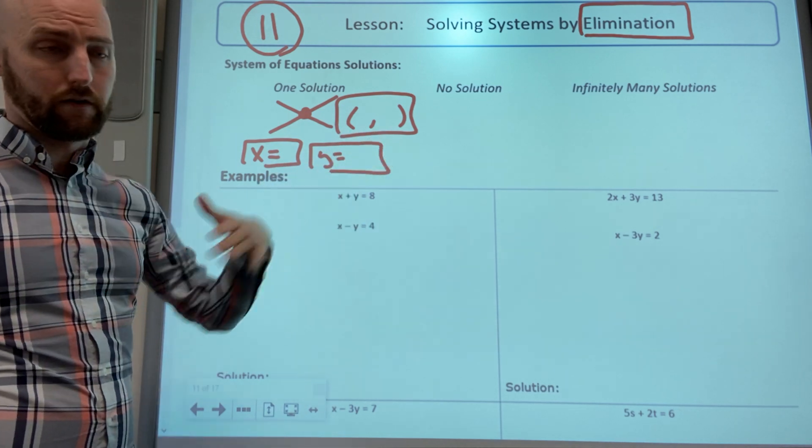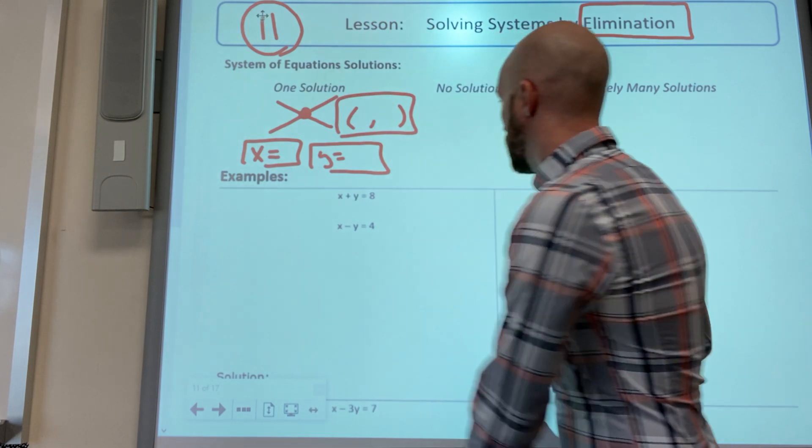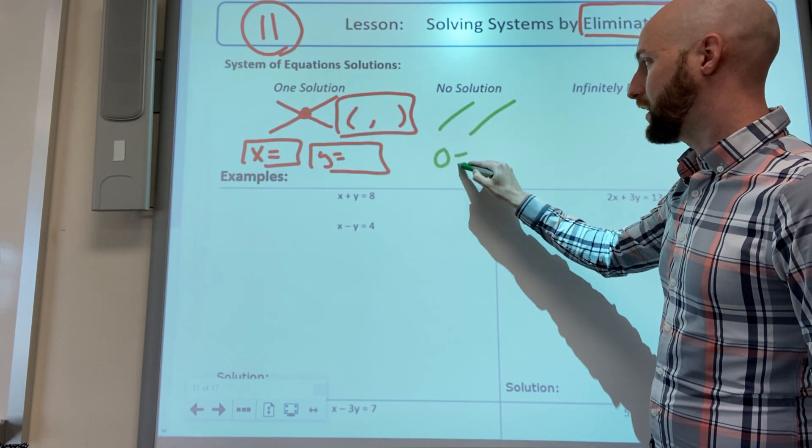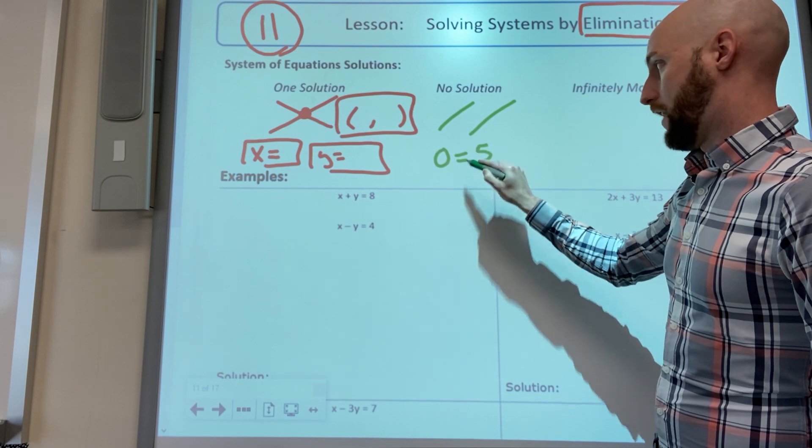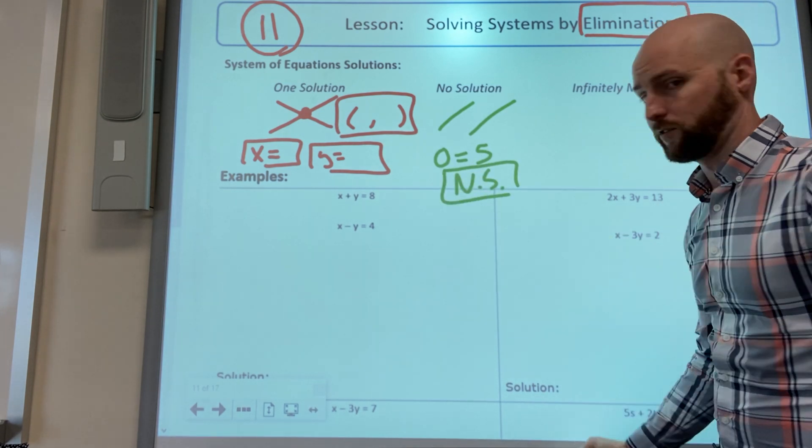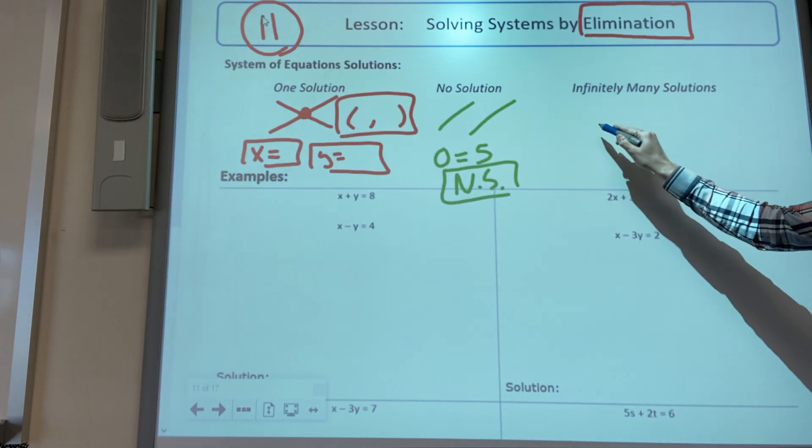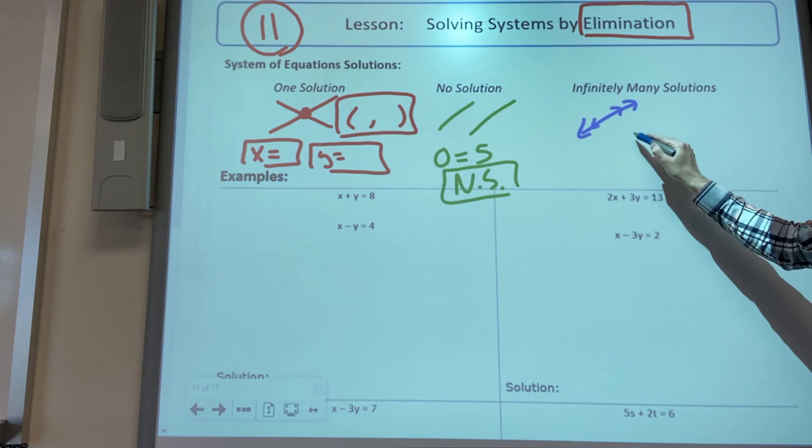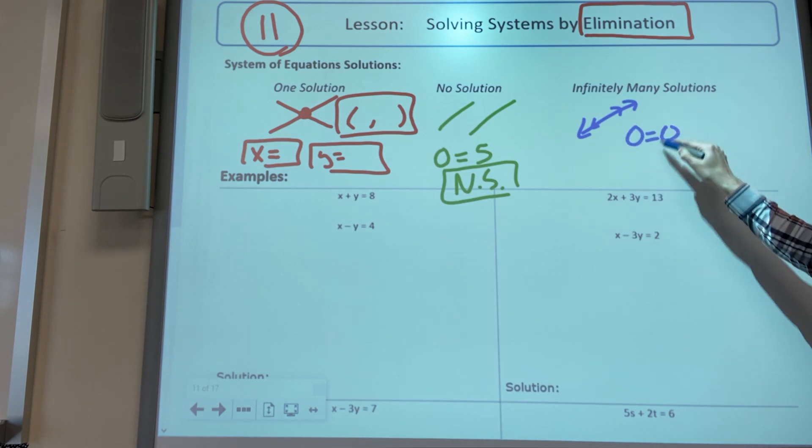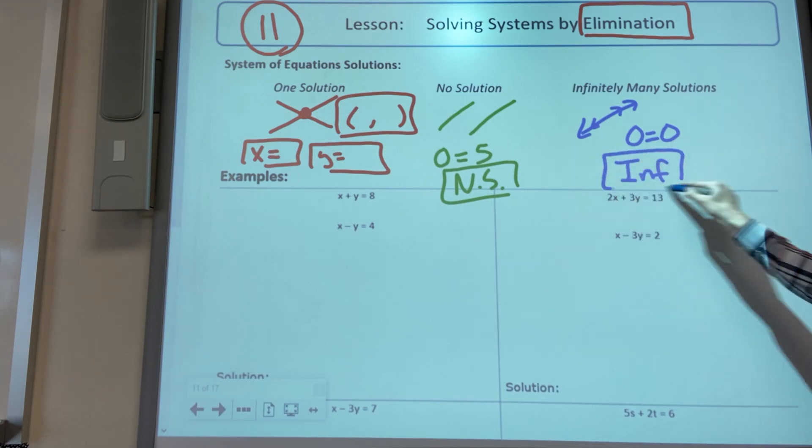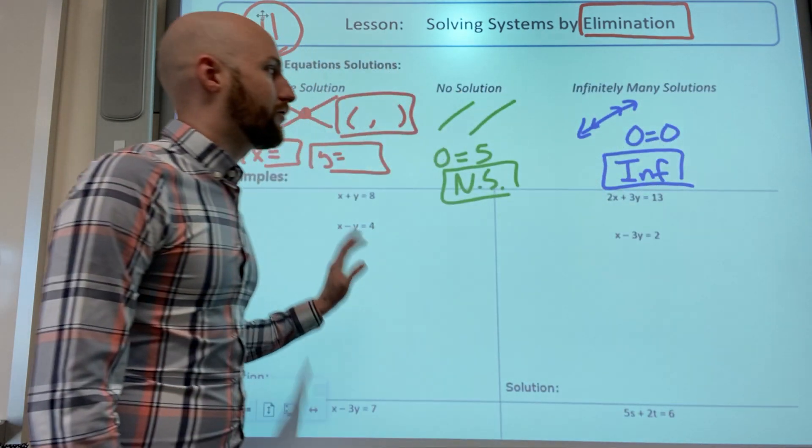No solution was when they were parallel or something like zero equals five. If it was false that would mean no solution. Infinite solutions era cuando era la misma línea arriba del otro or if you have something like zero equals zero it's true we would say infinite solution.